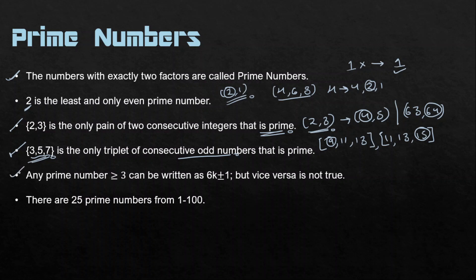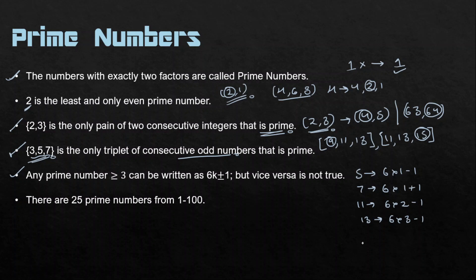Any prime number greater than 3 can be expressed in the form 6K ± 1. For example, prime number 5 = 6×1 − 1; prime number 7 = 6×1 + 1; prime number 11 = 6×2 − 1; prime number 13 = 6×2 + 1. The vice versa is not true — not every number of the form 6K ± 1 is prime.